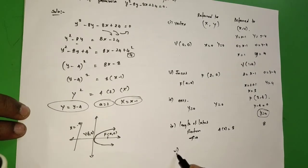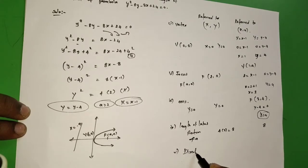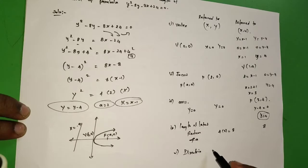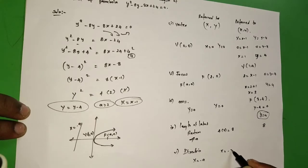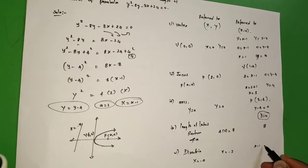The last one, directrix. That is x = -a, capital X = -a. So that means x - 1 = -2, so x = -2 + 1, x = -1.